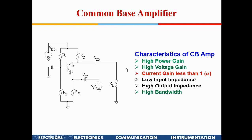The low input impedance — when you look into the emitter of the transistor, the impedance is RE — is generally not desirable if this amplifier is being driven by another amplifier, because low input impedance will adversely affect the gain of the driving amplifier. However, in certain RF applications this is acceptable.